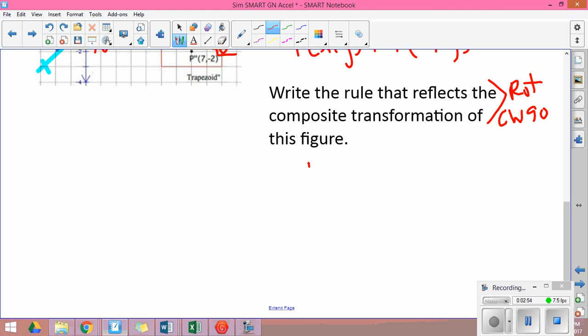From section 1, we know that the rule of that, T of (x,y), will become T prime of (y,-x).